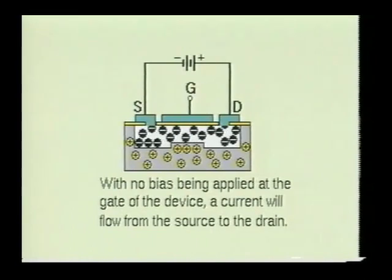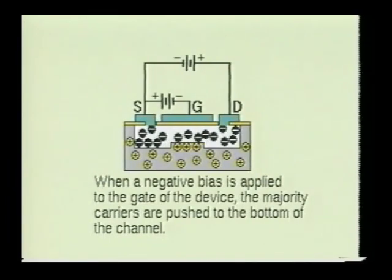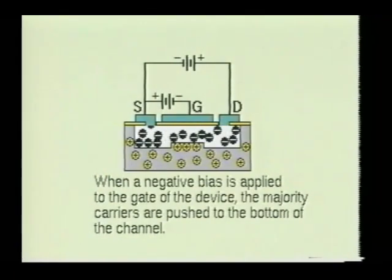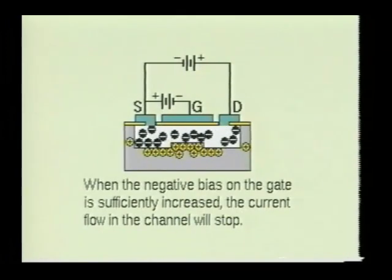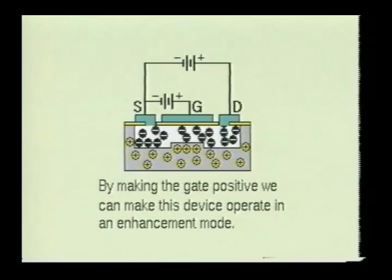Now suppose we make the gate negative with respect to the P material. The positive charge carriers will be induced into the lightly doped channel between the source and drain, absorbing the negative charge carriers in the N channel and causing the channel's resistance to increase. The charge carriers are also pushed toward the bottom of the channel. If the negative bias on the gate is sufficiently increased, it will cause the channel to stop the current flow between the source and drain — the gate is then said to have depleted the charge carriers from the channel. If we make the gate positive with respect to the P material, charge carriers become induced into the channel, decreasing the resistance and allowing more current to flow. Thus, this device can be operated either in the depletion or enhancement mode of operation.